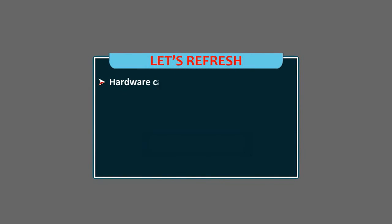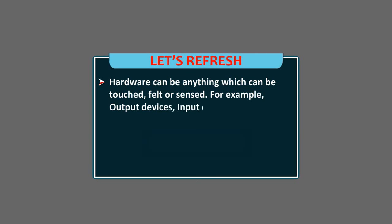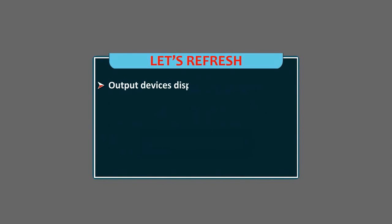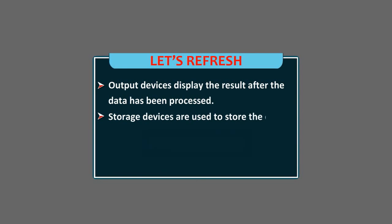Let's refresh: Hardware can be anything which can be touched, felt or sensed. For example, output devices, input devices, storage devices and processing devices. Input devices are used to enter the data into the computer. Output devices display the result after the data has been processed. Storage devices are used to store the data for future use. Processing devices are attached to the computer to process the information.